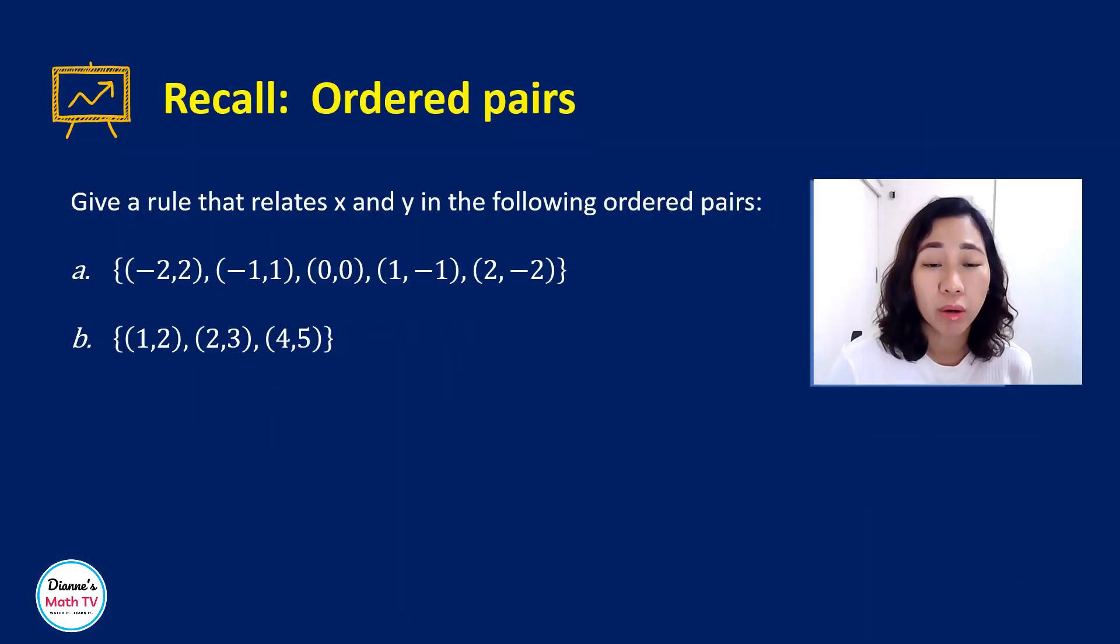So let us recall ordered pairs. Recall that for ordered pairs, you just have a pair with parentheses in it. The first number that appears is your x-coordinate and the second number that appears is your y-coordinate. Now, if we are given a collection or a set of ordered pairs, let us find the rule that relates your x and y-coordinates.